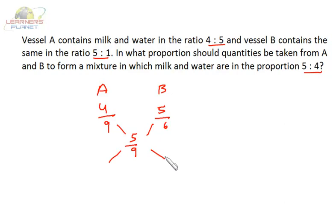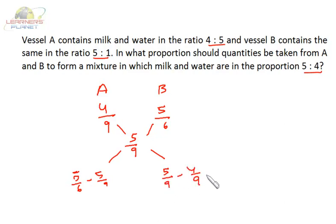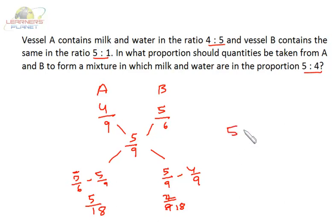Now we can find the ratio. It is (5/6 − 5/9) and (5/9 − 4/9). That gives 5 by 18 and 1 by 9, or 2 by 18. The ratio is 5 is to 2. So from vessel A, 5 parts, and from vessel B, 2 parts should be taken to get this mixture. Alternatively, you can take the water part instead of milk and solve the problem the same way.